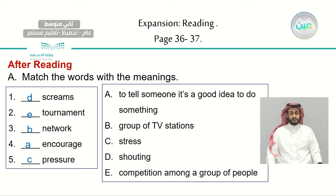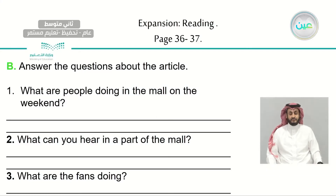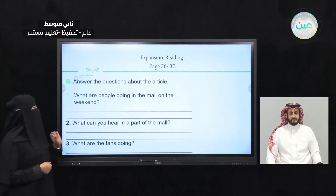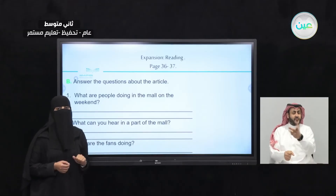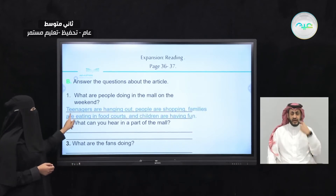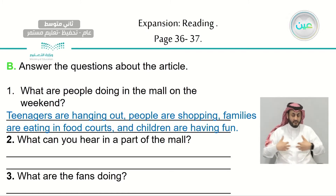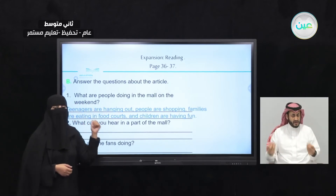Did you guess the meaning from the context when I highlighted the words? Now let's answer the questions about the article. The first question: what are people doing in the mall on the weekend? From the text: teenagers are hanging out, people are shopping, families are eating in food courts, and children are having fun.